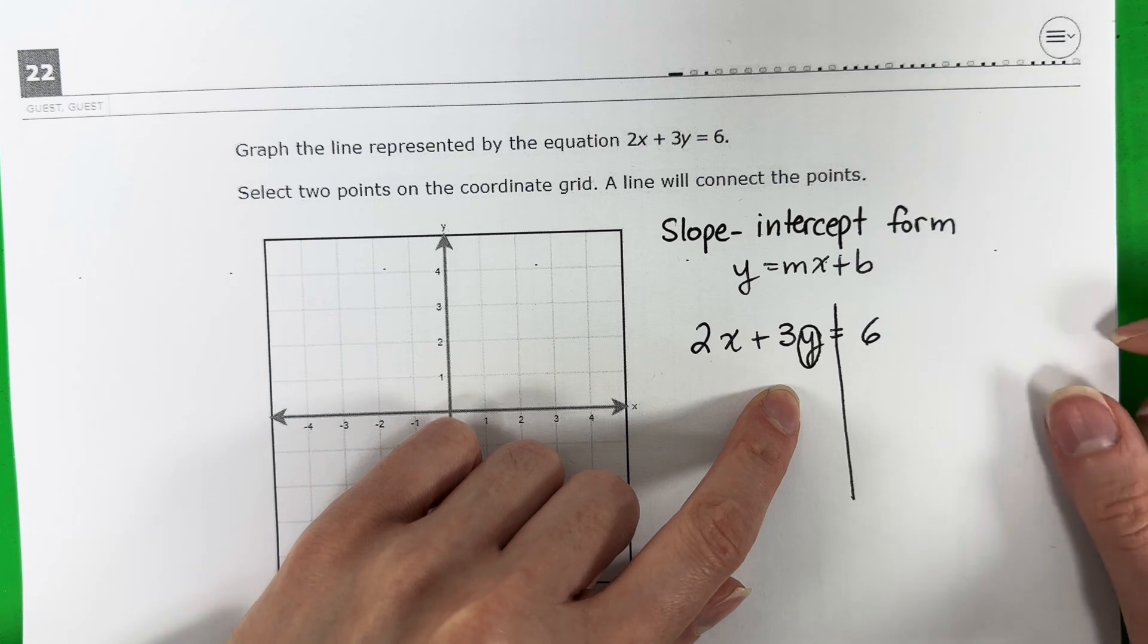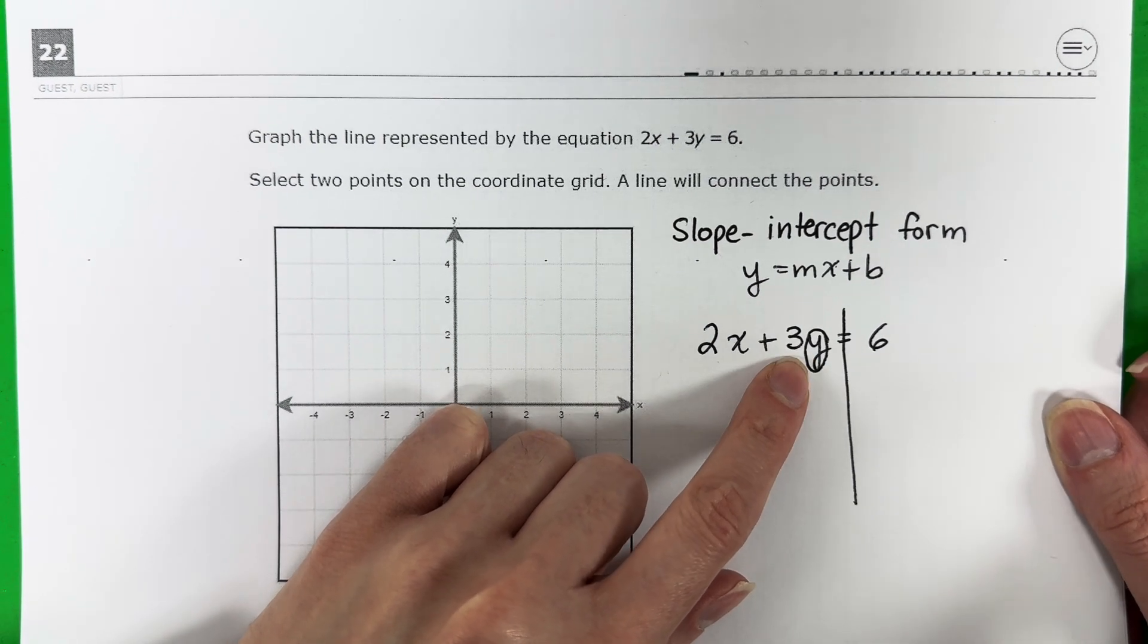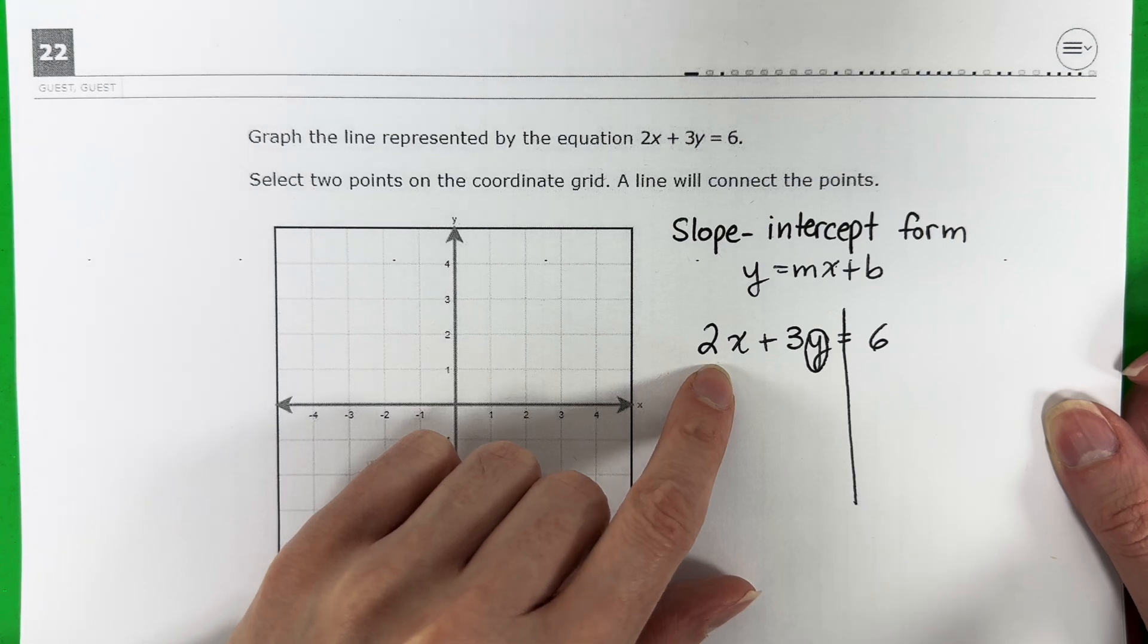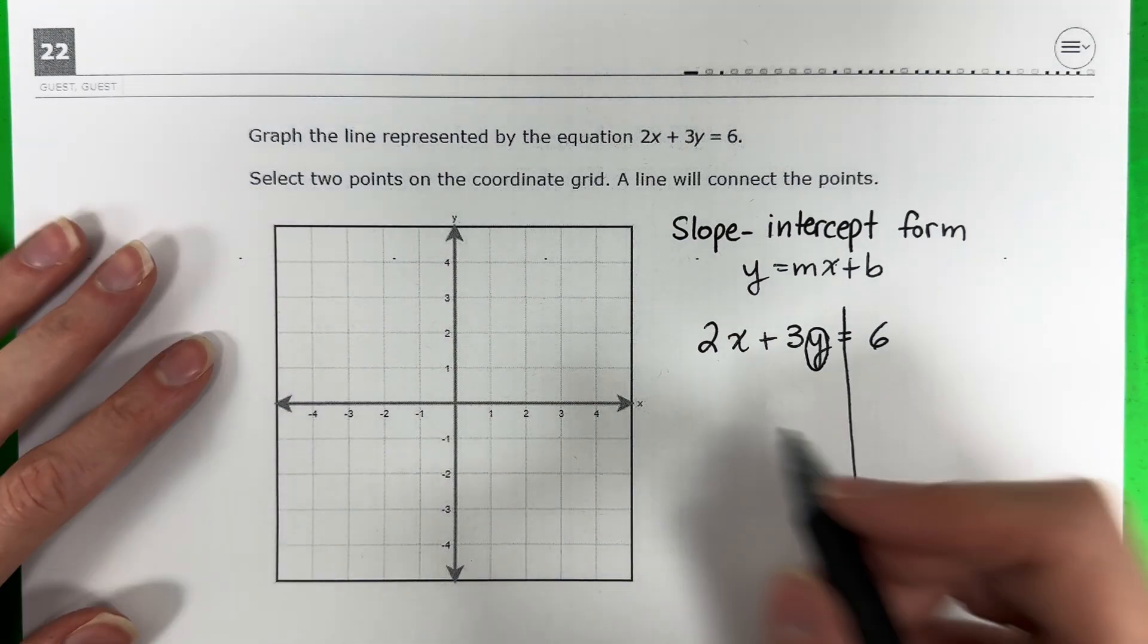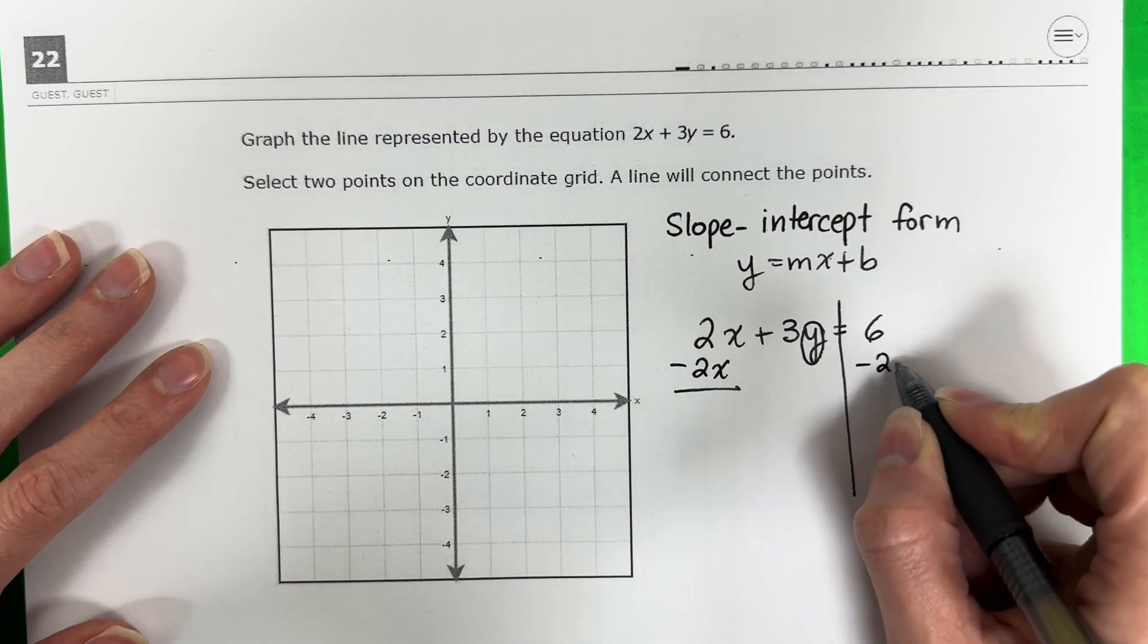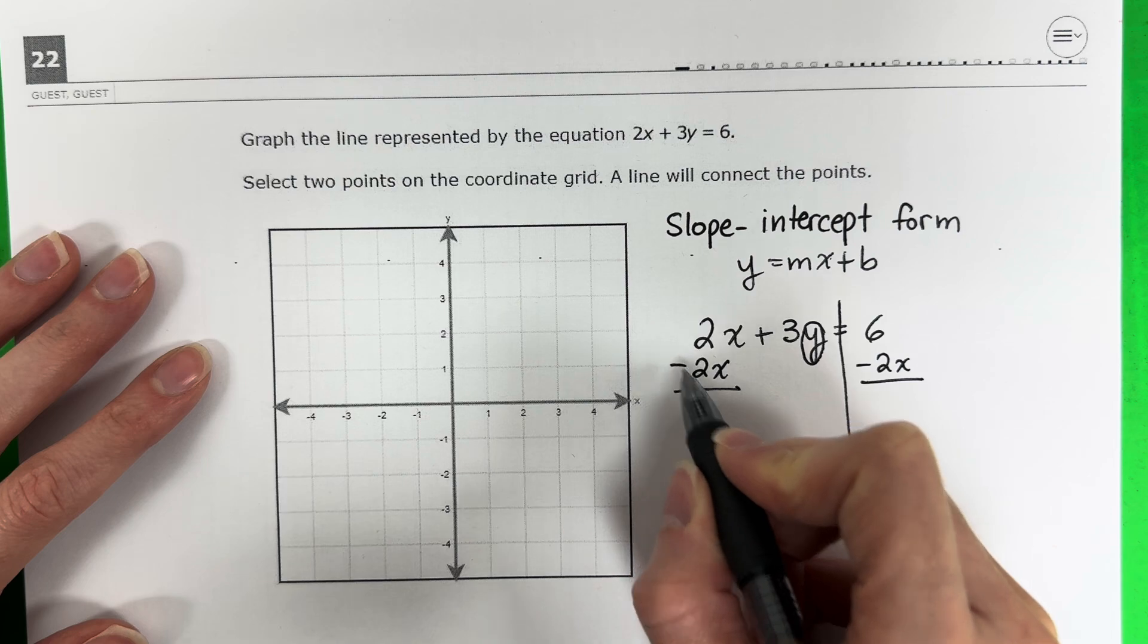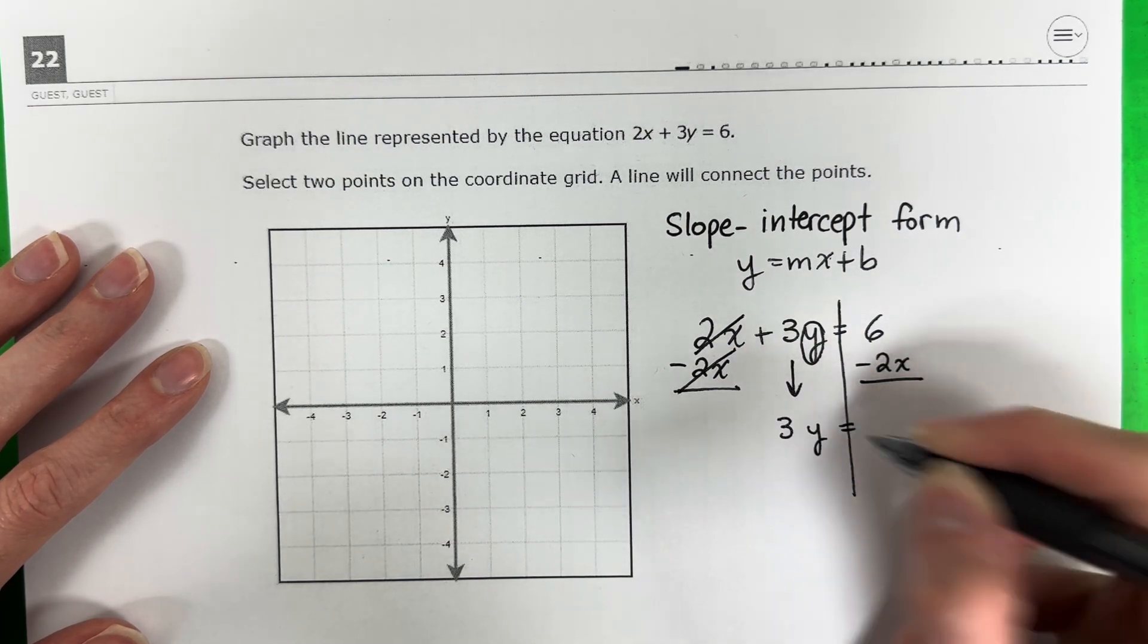So I want the y alone. Do not move the number with the y. What number is with y? 3. You're going to move the other one. So the other one is positive 2x. You do the opposite. The opposite is minus. So minus 2x and you copy to the other side. 2 minus 2 is 0. It cancels. Copy down 3y equals.